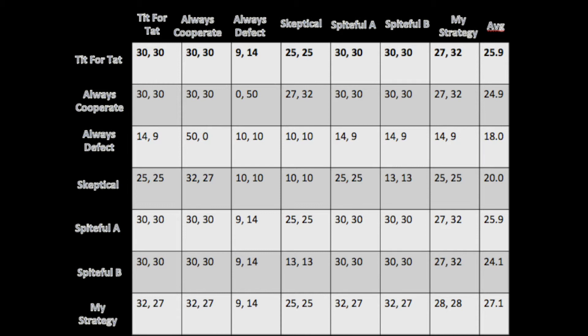We can see that difference start to make sense when we think about what happens on the last iteration. If everything is going right, my strategy will be forcing strategies like tit for tat, skeptical, spiteful A, and spiteful B to be cooperating, because they will have cooperated on all the other rounds. My strategy, having been built to defect on the last round, will win in that last frame by 5 points.